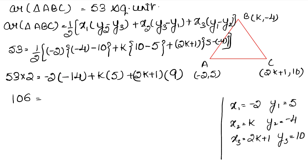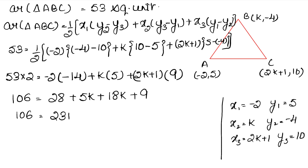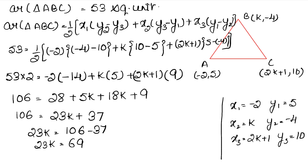अब देखिए: minus minus plus 14, 2 is 28। Plus 5k। 9 की multiplication 2k plus 1 में: 9 into 2k is 18k, plus 9 into 1 is 9। अब k की values एक साथ: 18 plus 5 तो 23k। Constant values: 28 plus 9 is 37। तो 23k plus 37 equals 106। 23k equals 106 minus 37 equals 69। तो k आगया हमारा 69 upon 23, that is k की value आगयी 3. यही answer है।